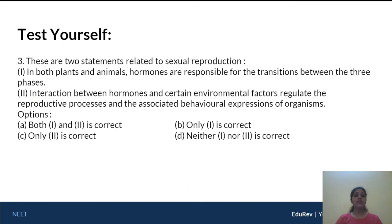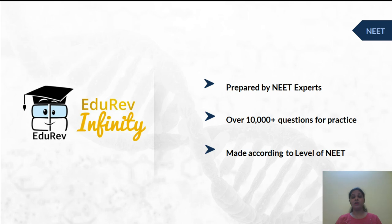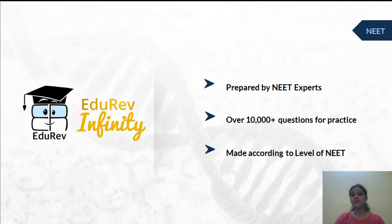The third question has two statements. Statement 1: in both plants and animals, hormones are responsible for transition between the three phases — correct. Statement 2: interaction between hormones and certain environmental factors regulates reproductive processes as well as associated behavioral expressions in organisms — also true. So the answer is option A. I hope you have enjoyed these five lectures on reproduction in organisms. Kindly go through the other lectures, notes, and tests present in EduRev Infinity, and I'm quite sure you will increase your nationwide ranking and do really well in your next exam. Thank you, students.